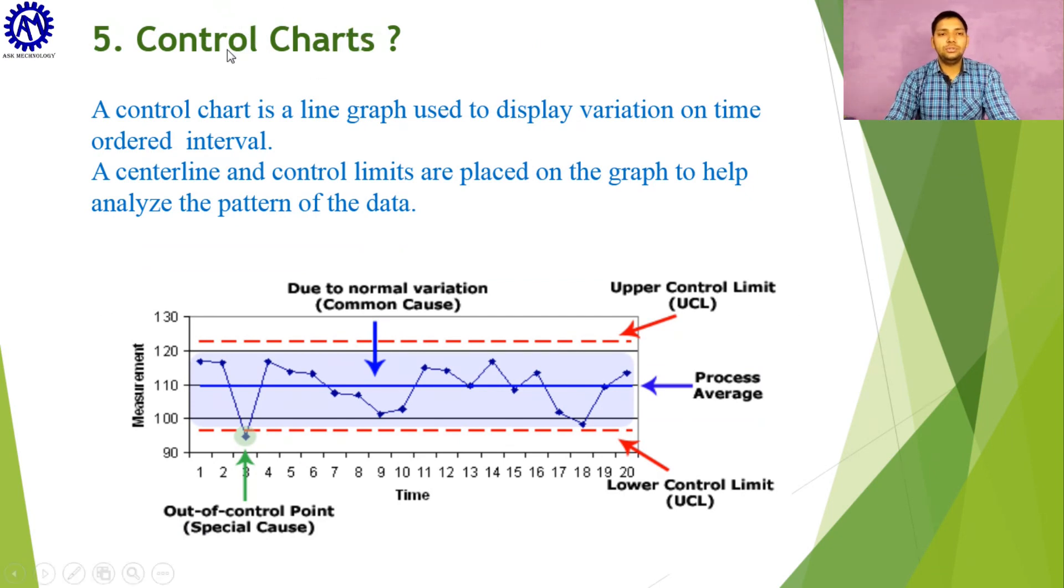After that, let us discuss the control chart. A control chart is a line graph used to display variation on time-ordered intervals. For example, a control chart is mentioned below in which upper control limit is shown above and lower control limit is shown below. In blue color, process average is mentioned between these lines. On the left side, measurements are given, and time is mentioned at the bottom of the graph. We are measuring how our process is running in each interval of time. A center line is given at the middle of the graph, analyzing the pattern of how our process is running with respect to the center line.